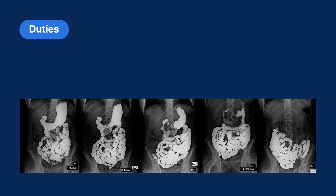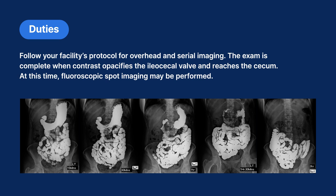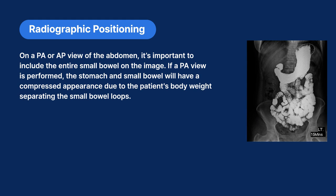For correct radiographic positioning, follow your facility's protocol for overhead and serial imaging. Typically, small bowel follow-throughs are performed prone unless the patient is unable to be placed in that position. The exam is complete when contrast opacifies the ileocecal valve and reaches the cecum, at which time fluoroscopic spot images may be performed. On a PA or AP view of the abdomen, it is important to include the entire small bowel. If a PA view is performed, the stomach and small bowel will have a compressed appearance due to the patient's body weight separating the bowel loops, which can be useful for assessing the small bowel mucosa.